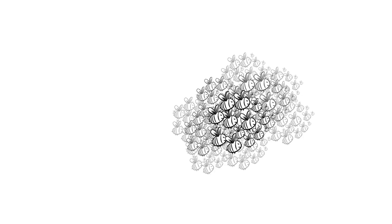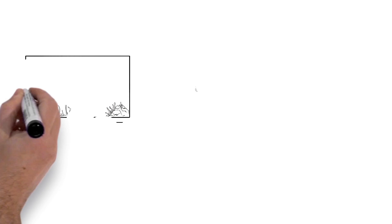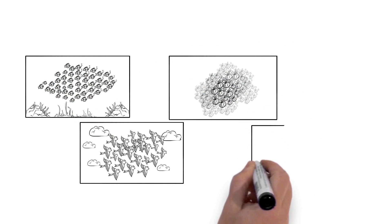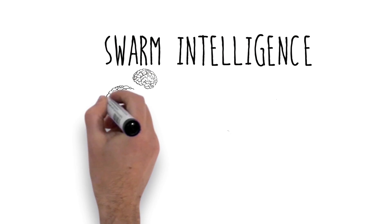Why do birds flock, bees swarm, fish school, and ants form colonies? They do this because the groups are smarter when thinking together than the individuals would be on their own. Scientists call this swarm intelligence.